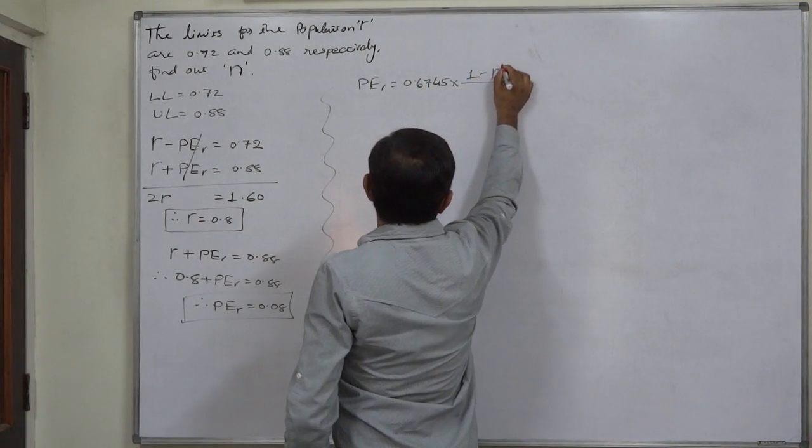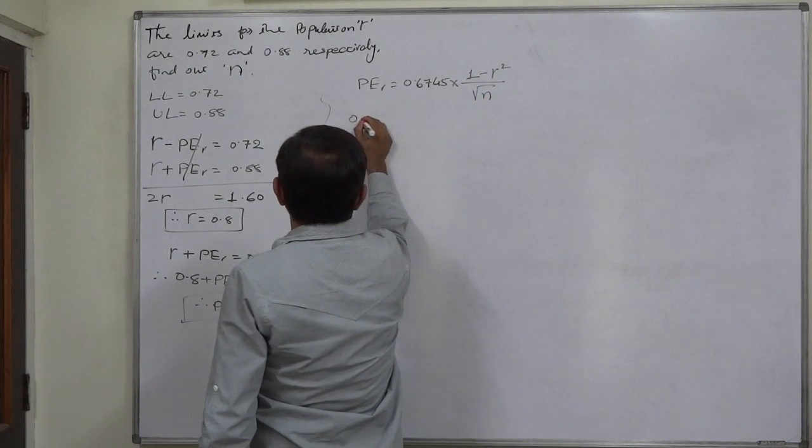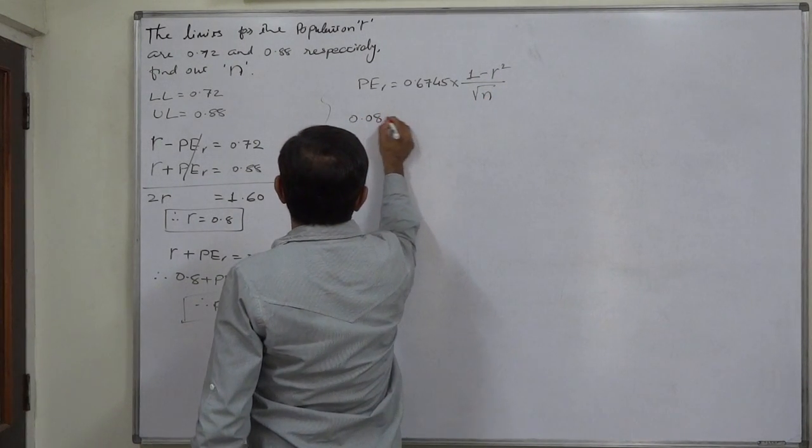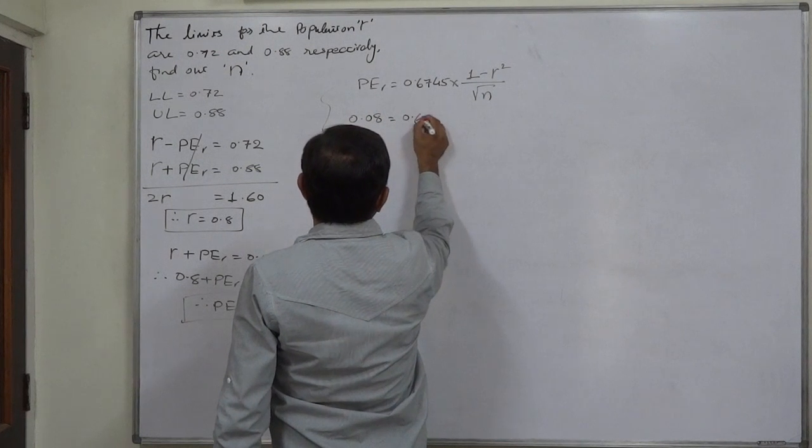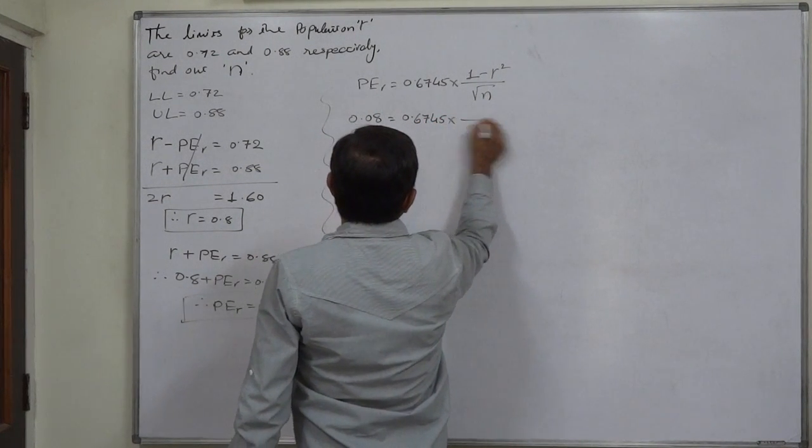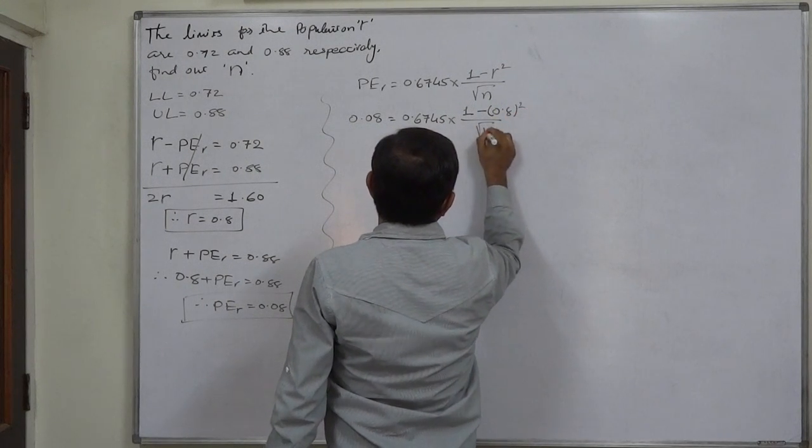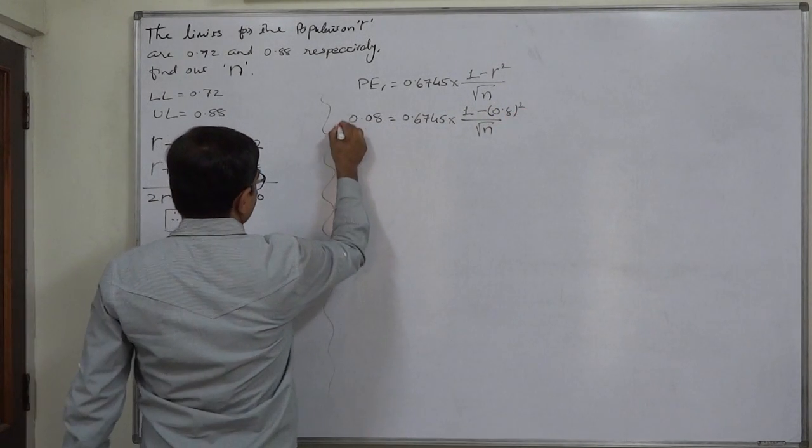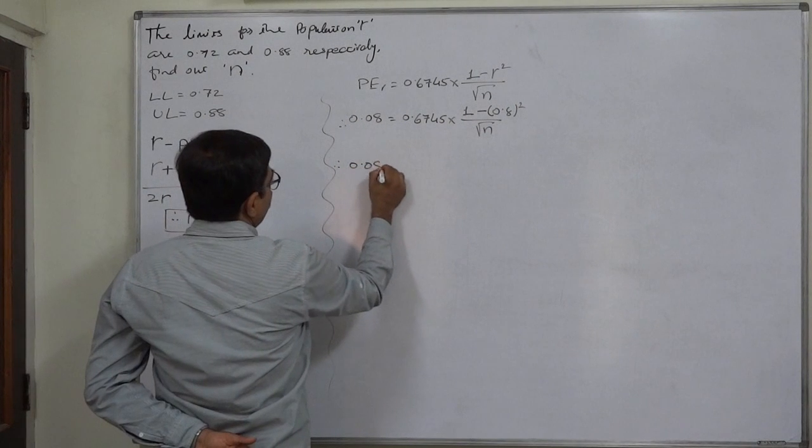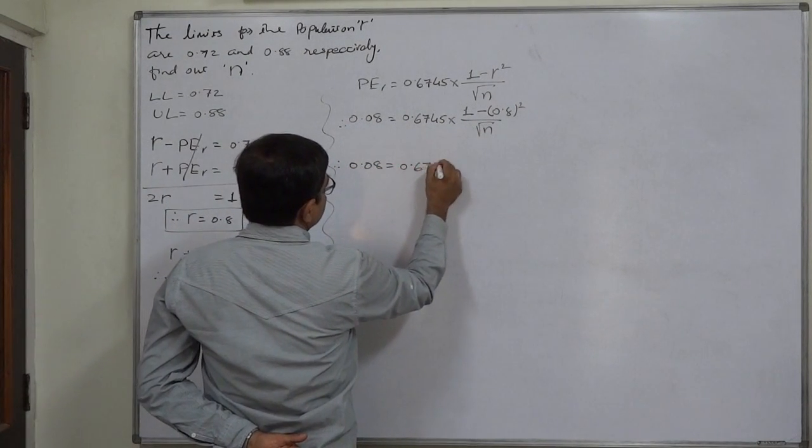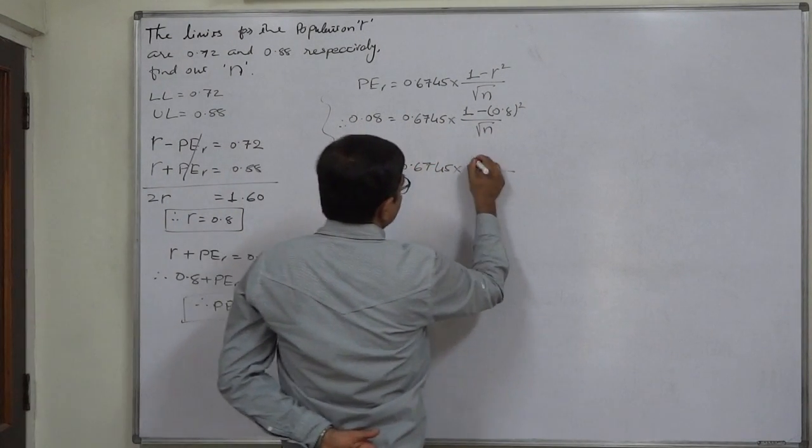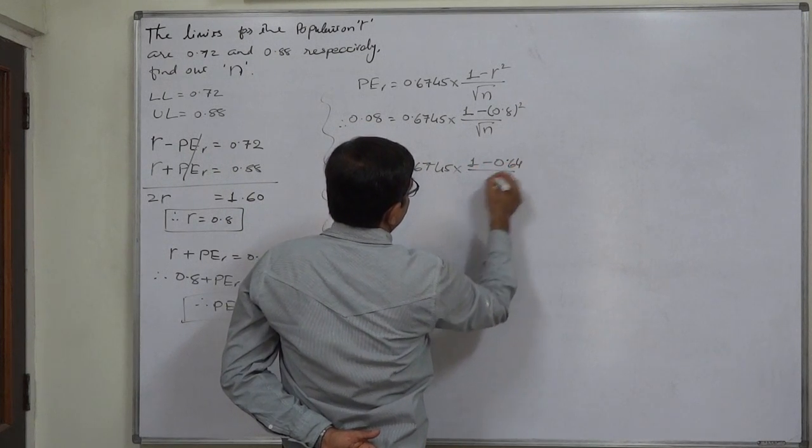That means 0.08 equals to 0.6745 into 1 minus 0.64 upon under root N.